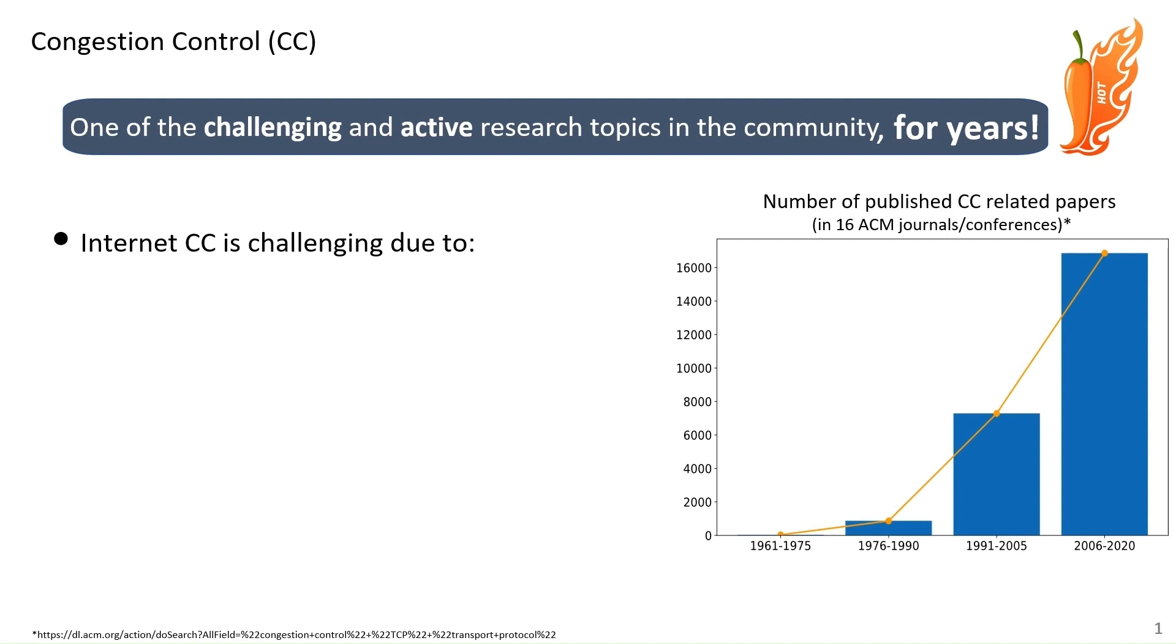In particular, if we focus on internet congestion control, the challenging aspect comes from different factors. The very first one is lack of perfect information. As you know, internet is based on the philosophy of dumb network, smart end-hosts, and congestion control is supposed to be done by the end-hosts there. However, end-hosts don't have perfect information about the online network. Things like what is the exact delay of the network at different times, what is the capacity of different links, different bottleneck links, and for instance, things like number of competing flows, and so on and so forth.